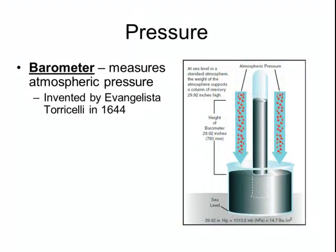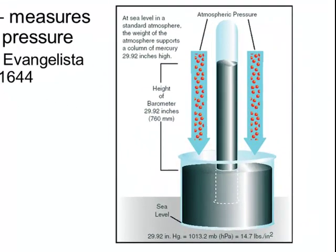How Torricelli's barometer worked: he took a long glass tube and filled it with mercury, and then inverted it into another container that also had mercury in it. Some of the mercury inside the glass tube flowed out into the surrounding beaker, but only up to a certain point. That point depended on the amount of atmospheric pressure pushing down on the surrounding container. Torricelli noted that at sea level, the height of the mercury was always 760 millimeters, or approximately 30 inches, which is the value we associate with normal atmospheric pressure.